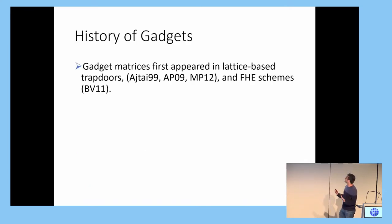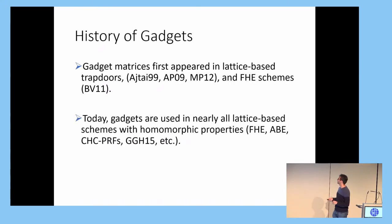Gadget matrices originally appeared in lattice schemes through lattice trapdoors. This is where we want to generate a random matrix A and keep some secret short vectors in the SIS lattice. These secret short vectors help us, allow us to efficiently invert the SIS and other B functions. And also, in the form of key switching in FHE, this is where gadgets also came about, always as a bit decomposition. Now, today, it seems like nearly every lattice scheme with advanced homomorphic capabilities has some underlying gadget operation included in it. So this includes FHE, ABE, constraint-hiding-constrained PRFs, and everything else that's built off of the GGH15 scheme.